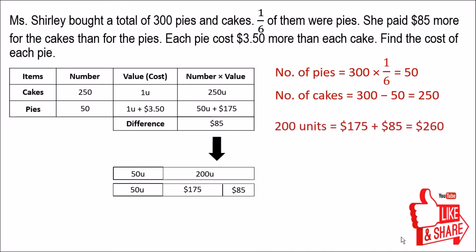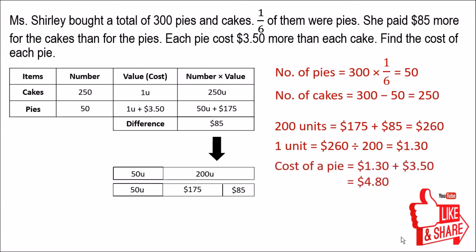From the model, 200 units equals $175 plus $85, which gives us $260. Therefore, one unit equals $260 divided by 200, which equals 130 cents — and that is the cost of each cake. The cost of each pie is one unit plus $3.50.